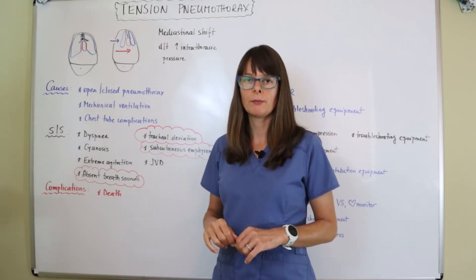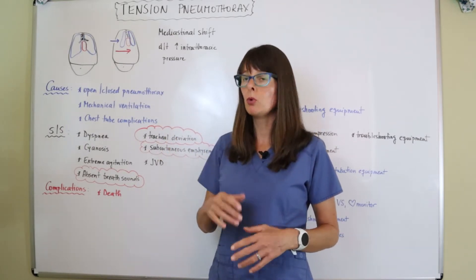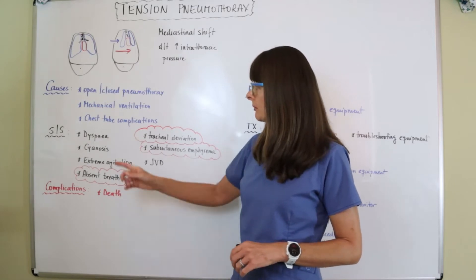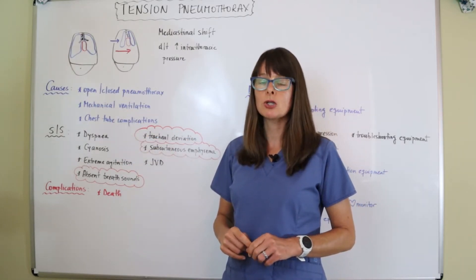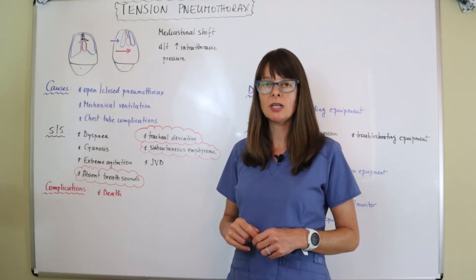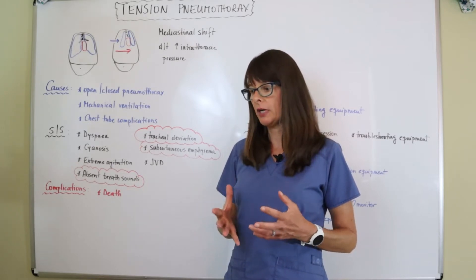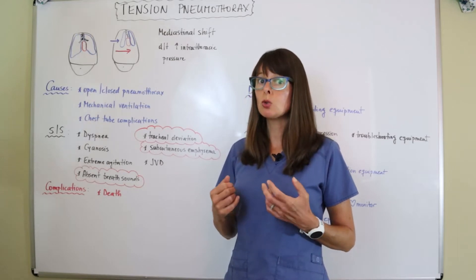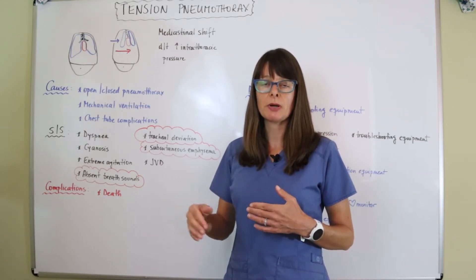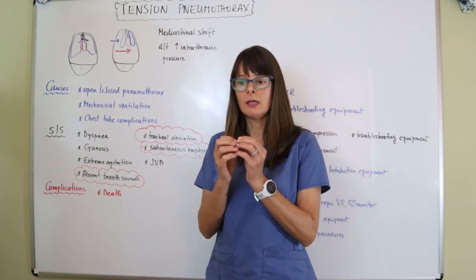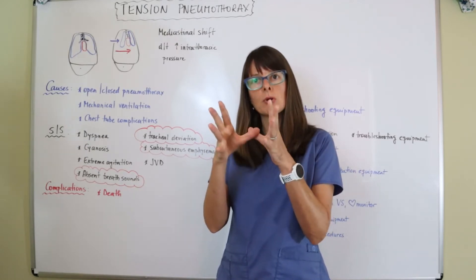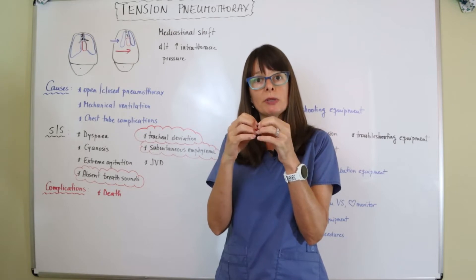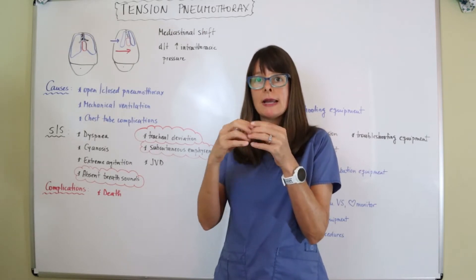Mechanical ventilation can also cause a tension pneumothorax. And what happens here, if the ventilator malfunctions or maybe there's too much PEEP, positive end-expiratory pressure, that fills up those alveoli, it can burst the alveoli.